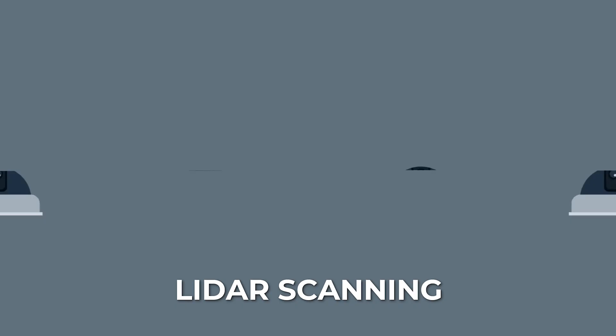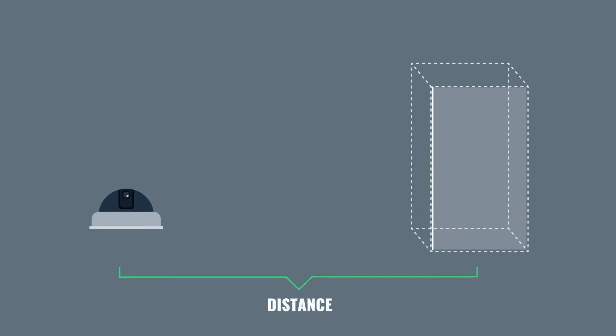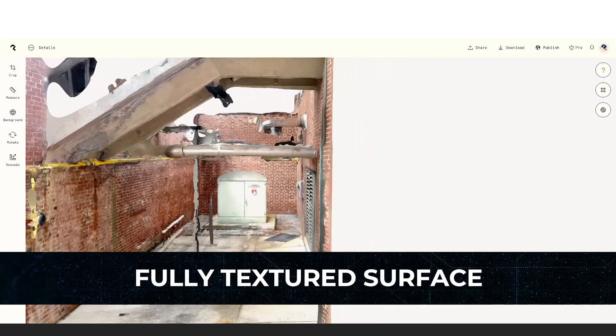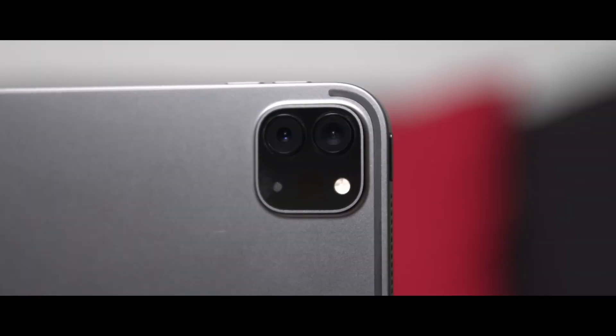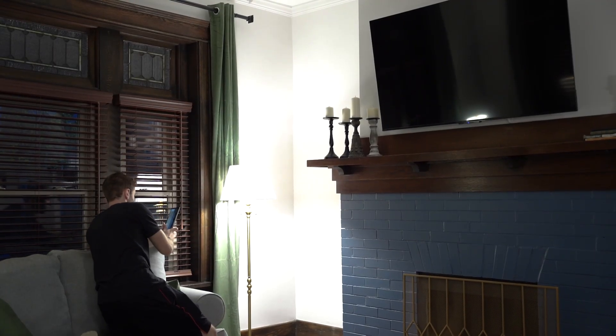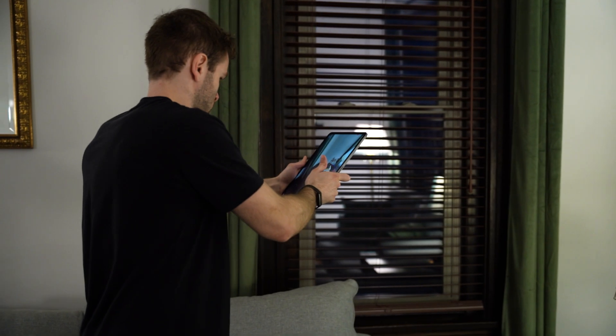Meanwhile, LiDAR scanning actually uses pulsed lasers shot out into the environment to determine the size and scale of objects and capture your scene in the form of a 3D model. LiDAR is extremely accurate in terms of scale and measurements, so it allows you to capture your environment to scale with a high degree of precision. While LiDAR scanning does require hardware to accomplish, many people already have this hardware in their pocket in the form of an iPhone or an iPad Pro, which comes equipped with a LiDAR scanner built in. This method is great for capturing larger environments, though the result is not typically as detailed as photogrammetry.